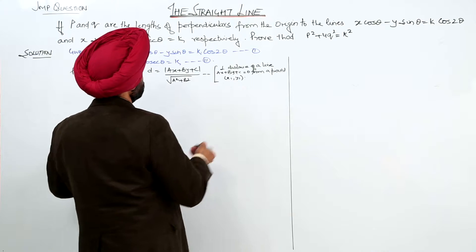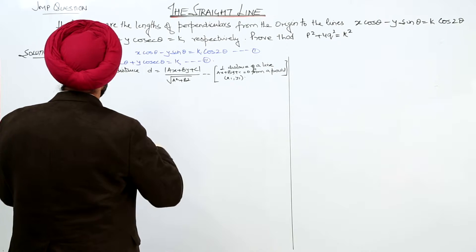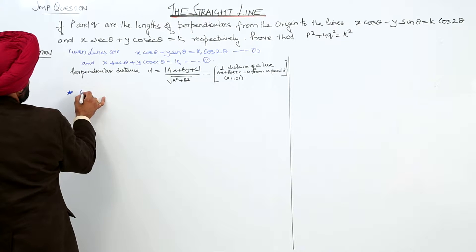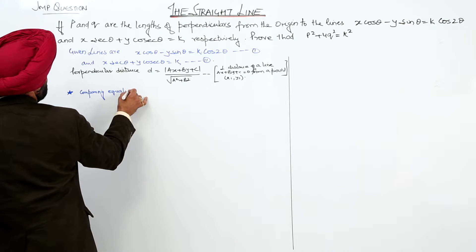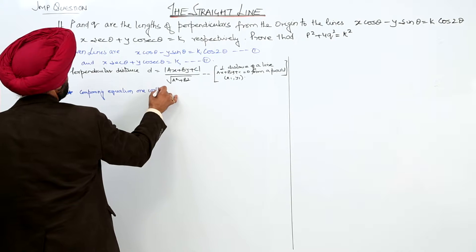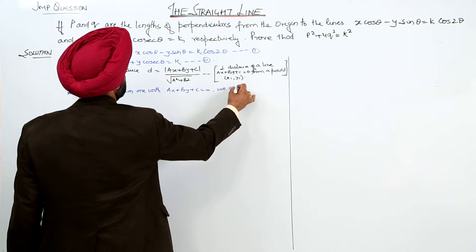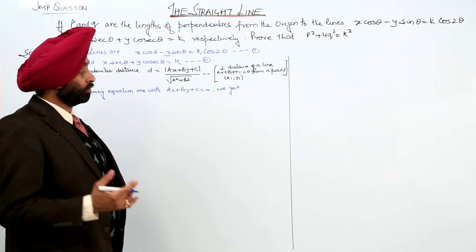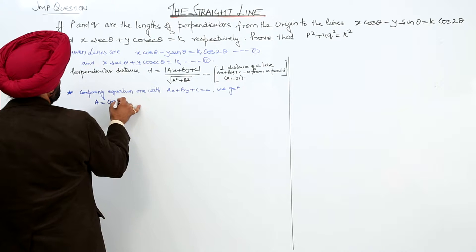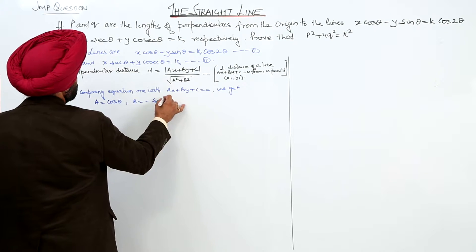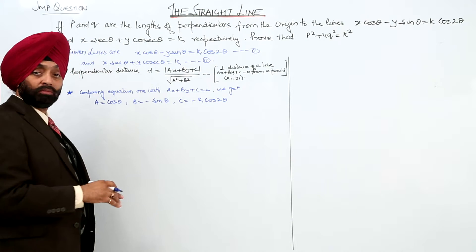Comparing equation 1 with ax + by + c = 0 to put it in general form, we get: a = cos θ, b = −sin θ, and c = −k cos 2θ, taking the right-hand side to the left.